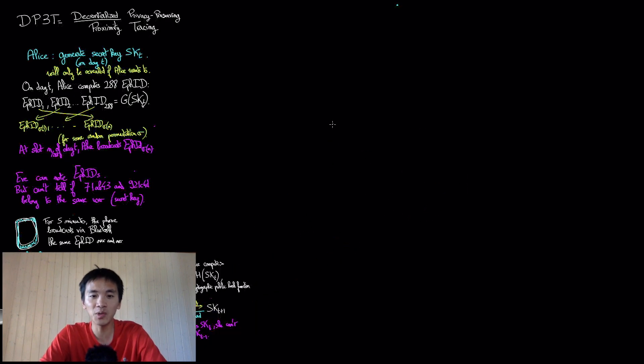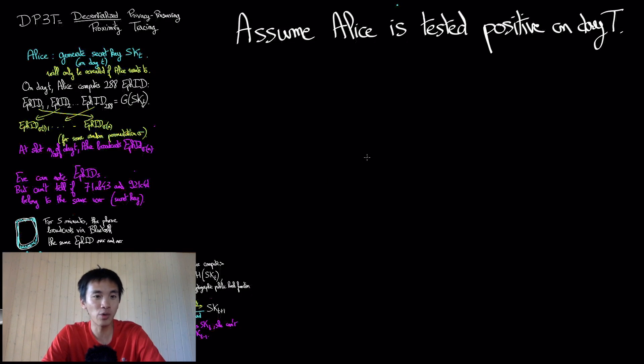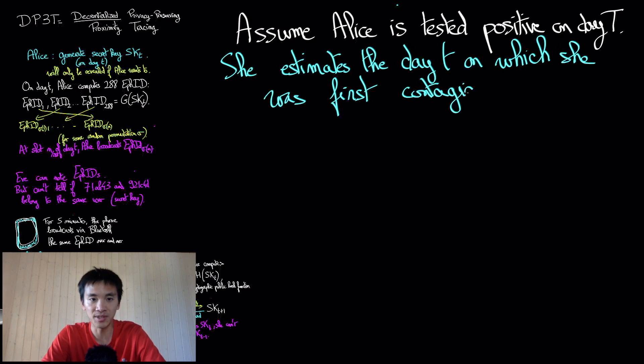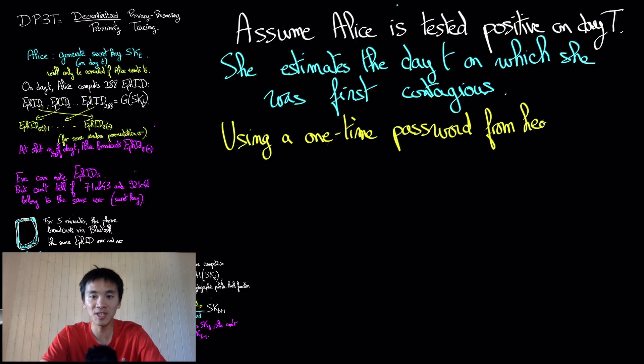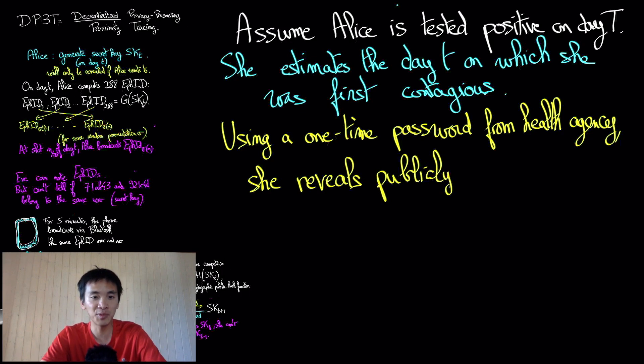Now, assume that Alice finds out that she is COVID positive on day T. Then, in collaboration with health agencies that tested her, Alice will estimate the first day on which she was contagious. Then, to alert other users of COVID risks so that they too get tested and can isolate themselves, with the authorization of the health agencies that will typically come in the form of a one-time password delivered at the same time as the test result, Alice can share publicly her secret key SKT.